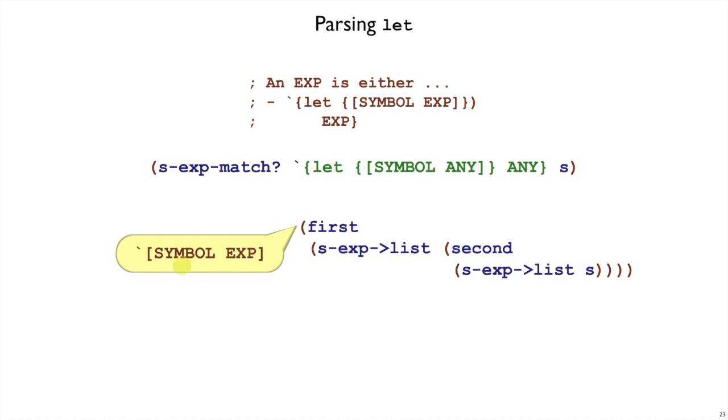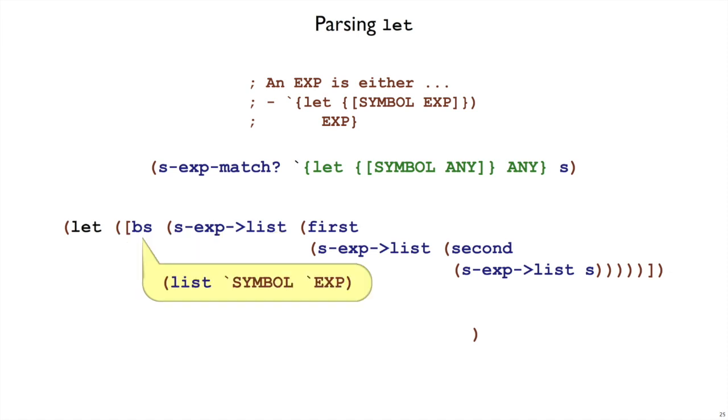So then we have an s-expression that just has symbol and exp inside of it. We can then turn that into a list of s-expressions, and I'm going to bind the result to bs. So converting this list-like expression to a list of s-expressions gives us a list with a symbol and an expression in it.